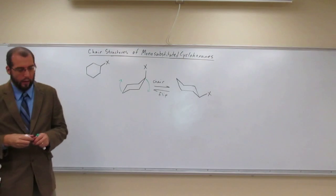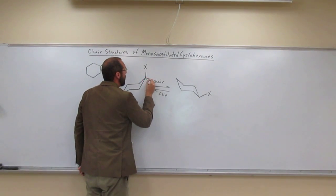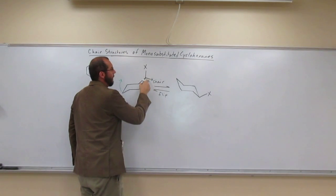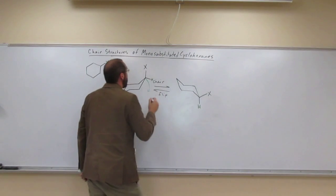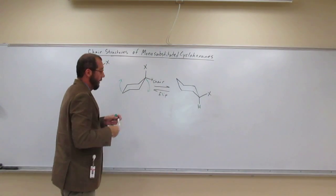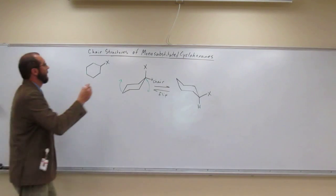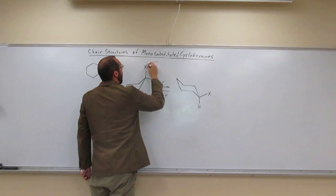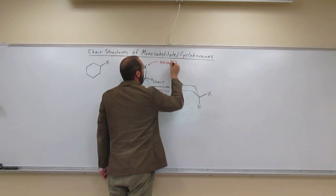Remember also, I'm just going to show the hydrogen that's on the same carbon as X. We have that hydrogen there, which is now there. So what do we say? That initially, the substituent X is in an axial up position.